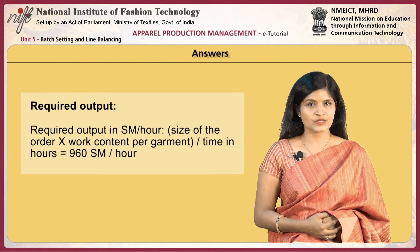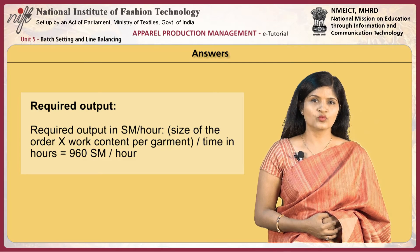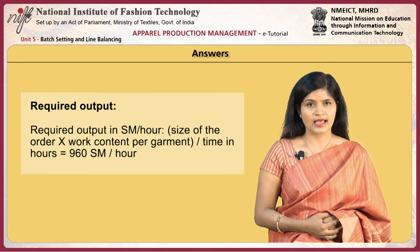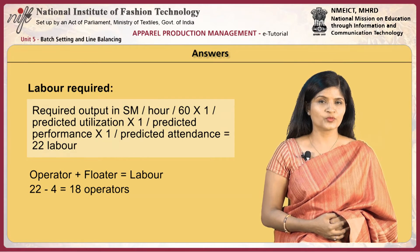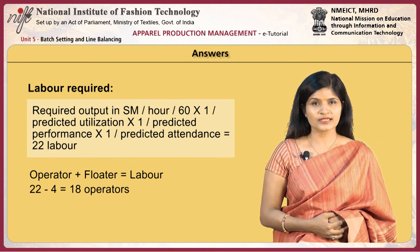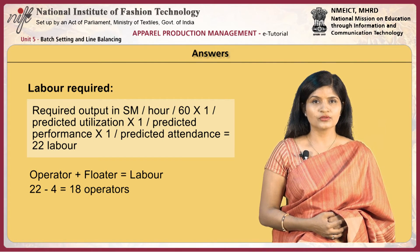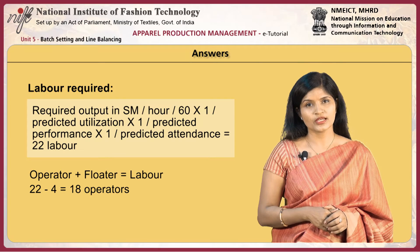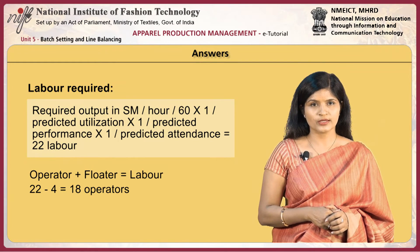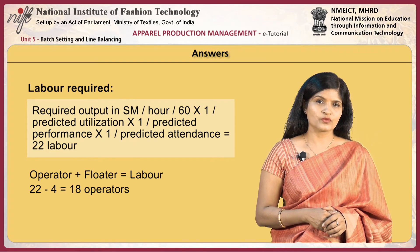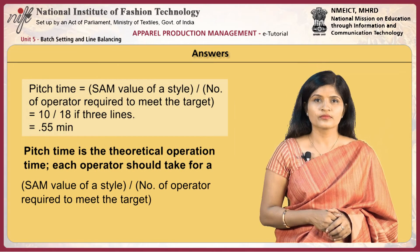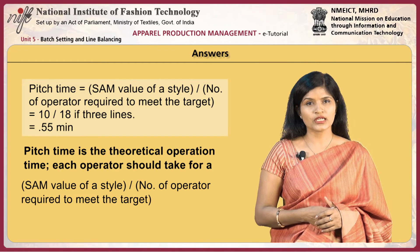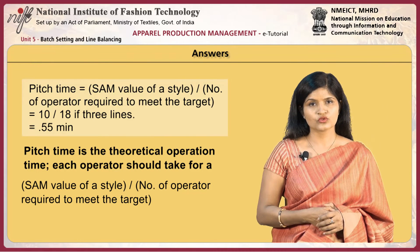Required output in standard minutes per hour is calculated as the size of the order multiplied by work content per garment divided by time in hours — that is, 960 SAM per hour. Labor required equals required output in standard minutes per hour divided by 60, multiplied by 1/predicted utilization, 1/predicted performance, and 1/predicted attendance. The answer is 22 labor. Since operator plus floater equals labor, operators equal 22 minus 4, giving 18 operators. Pitch time equals SAM value divided by number of operators, giving 0.55 minutes.